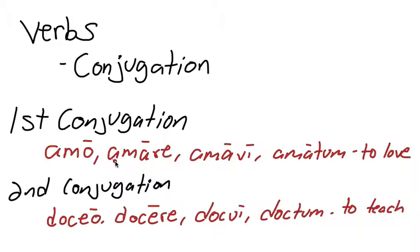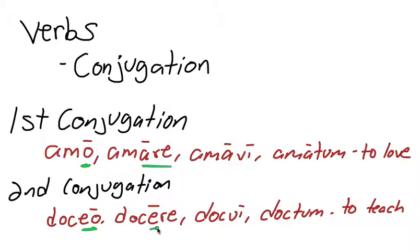Just observing first and second conjugation verbs, we can see that verbs like amo, which are first conjugation, end in -o, and verbs like doceo, which are second conjugation, end in -eo. So just by looking at the first principal part we can tell the difference. We can also tell by looking at the second principal part: -are for first conjugation and -ere for second conjugation.